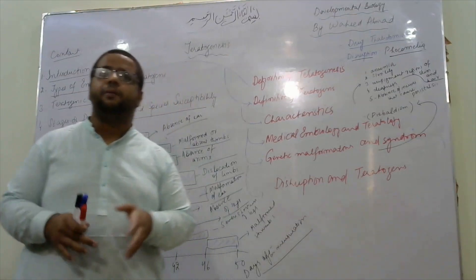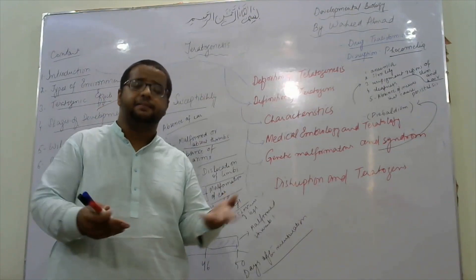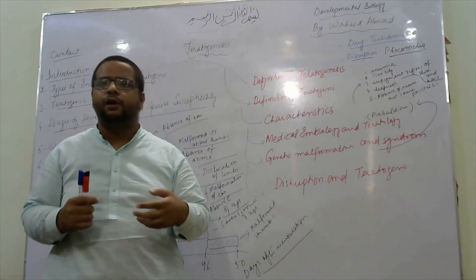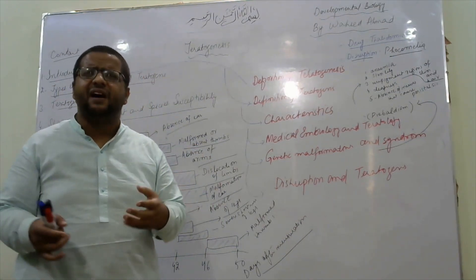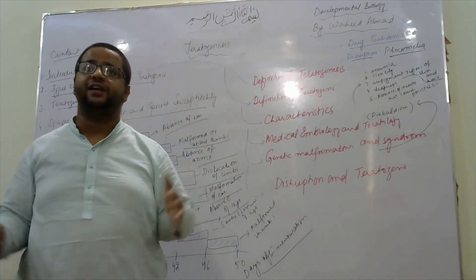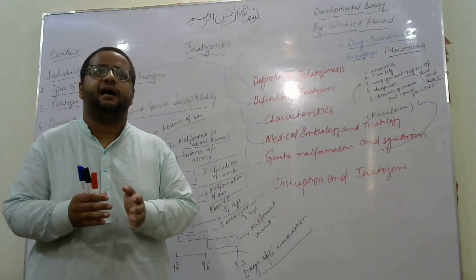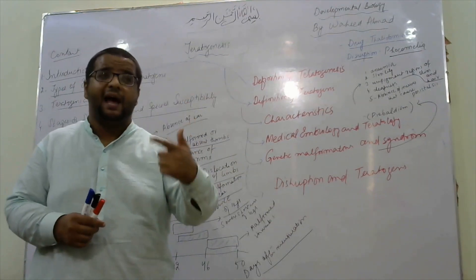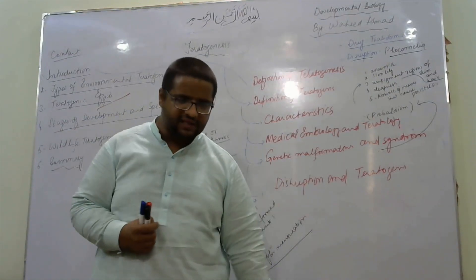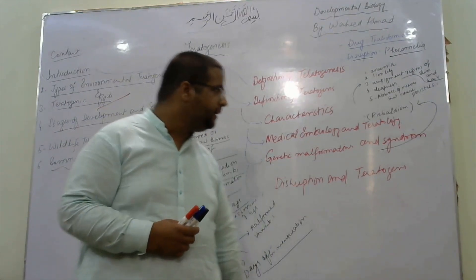When a collection of malformations occurs together, that is a syndrome. So that may be shortening of limbs, heart problems, limb defects, certain facial defects, or cleft palate. These are all individual malformations. When they are combined together they form a syndrome, and a syndrome is mostly due to a genetic reason.